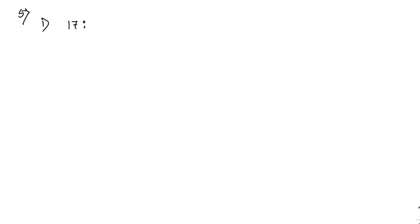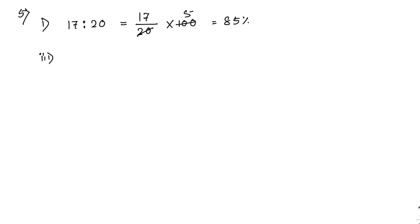Now sum number 5: express the following ratios as percentages. The first one is 17 is to 20, written as 17 by 20. Multiply by 100 — cancelling the 20 gives 5 — so 17 into 5 equals 85 percent.